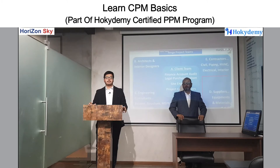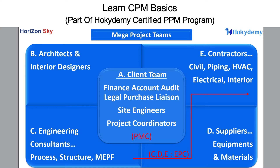In this module, we will be seeing the different types of teams involved in any kind of mega project. As you can see here, there are mainly five teams. The first one is the client team. Second will be the architects and interior designing team. Third will be our engineering design consultant, who will do the entire engineering design — HVAC, civil design, mechanical, electrical, and all that. Fourth will be our suppliers, who supply materials, equipment, and machinery. And finally, we will have the contractors, who execute our entire project — civil contractors, MEP contractor, HVAC, firefighting, electrical, and all those contractors.